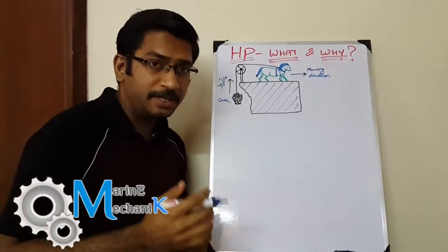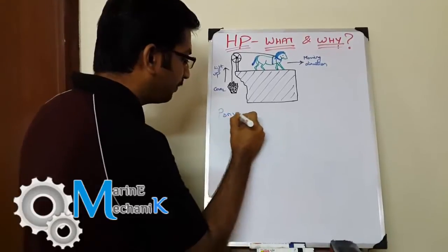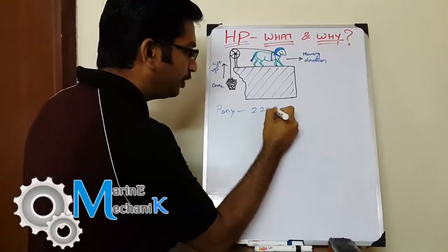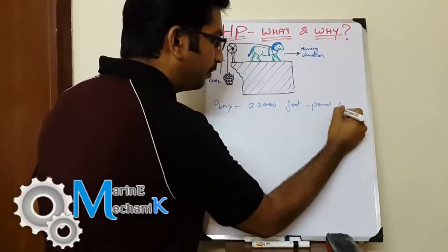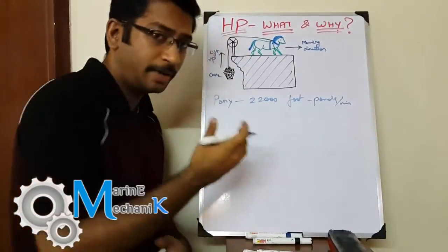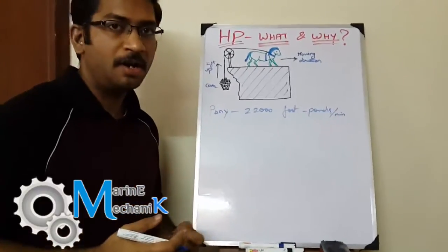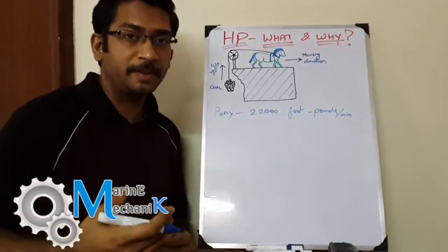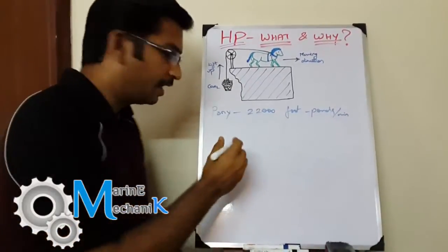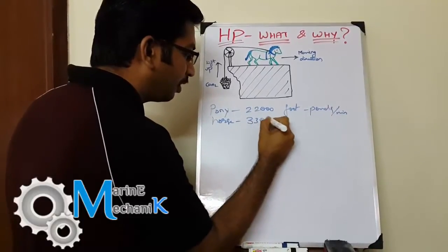A small pony, as discussed earlier, he quantified as 22,000 foot-pounds per minute. He raised this by roughly 50 percent more for a horse, assuming it would do 50 percent more work than a small horse. For a horse, he estimated it to be 33,000 foot-pounds per minute.